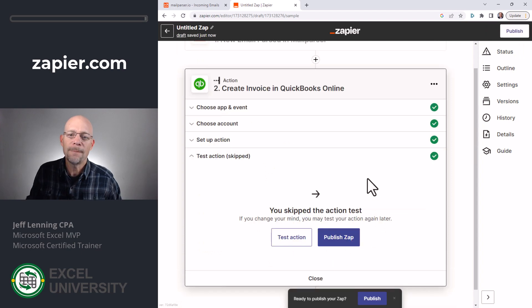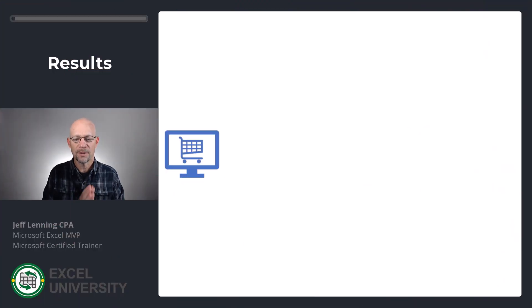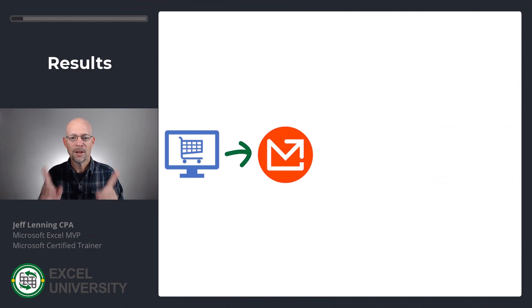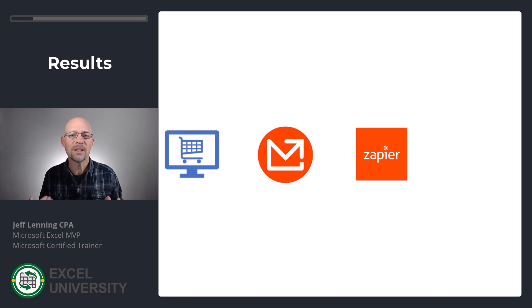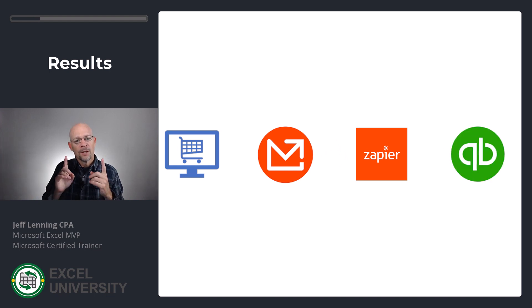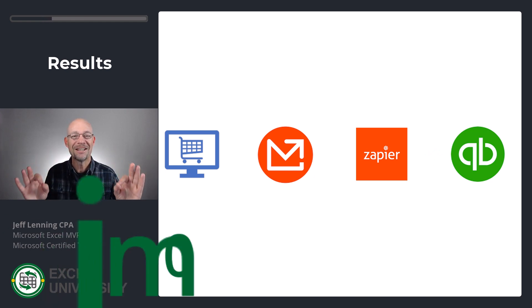And then we test the action. Once you have everything set, you can click Publish Zap, Publish and Turn On. What's going to happen is when an order is placed in our e-commerce system, a confirmation email is going to be sent directly to the Mail Parser inbox. Mail Parser is going to do its thing instantly — filter through, find those fields, send them to Zapier. Zapier is going to catch that data and then add it to QuickBooks. So that's going to all be automatic. And now guess what? That process went from 30 minutes to 15 to five to zero.